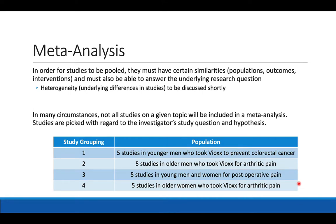For studies to be pooled in a meta-analysis, they must have certain similarities: similar populations, the same outcome, and similar interventions — all able to answer the underlying research question. There's something called heterogeneity, which reflects underlying differences in studies. If heterogeneity is present in significant quantity, we would not want to pool those particular studies.